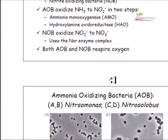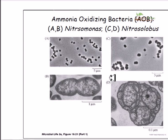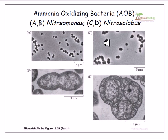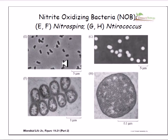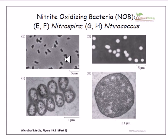Now let's look at some ammonia-oxidizing bacteria (AOB) species. Here are different species of AOB: Nitrosomonas and Nitrosolobus. This is a zoomed view of Nitrosomonas species, and this is Nitrosolobus. Both Nitrosolobus and Nitrosomonas can oxidize ammonia and convert it into nitrite and then nitrate.